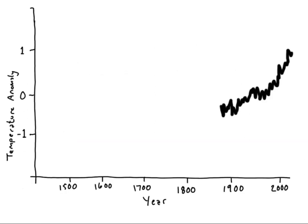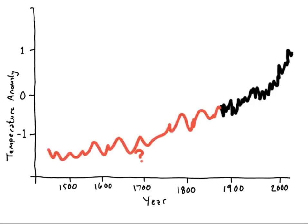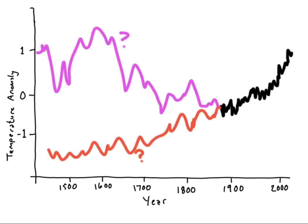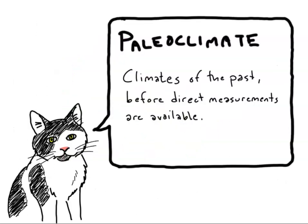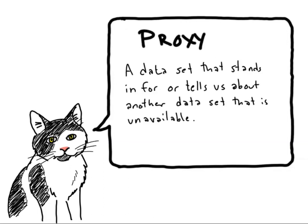We have a good set of direct measurements of climate going back to about 1880. But what about before that? Can we say anything about what was happening to the Earth's climate in earlier times? We can. Paleoclimate is the study of climate in the past. We can examine paleoclimate at a variety of scales, and at different scales we can use different sorts of information to learn about past climates. When we look at paleoclimate, we rely on what are called proxy data sets.